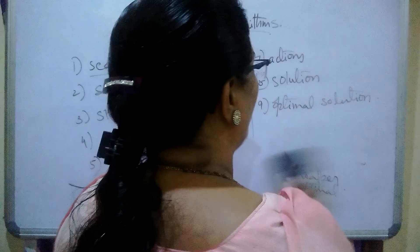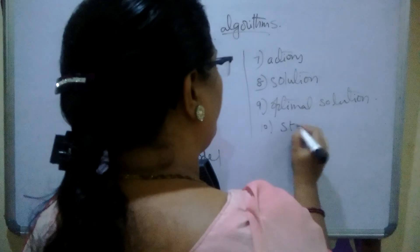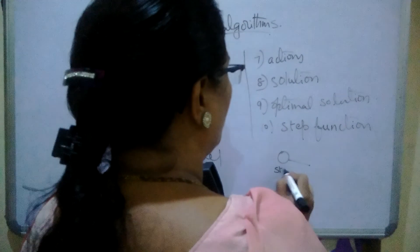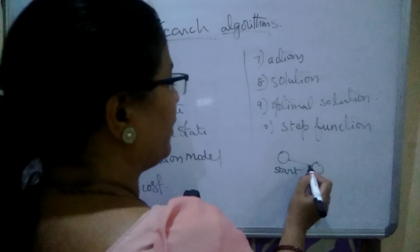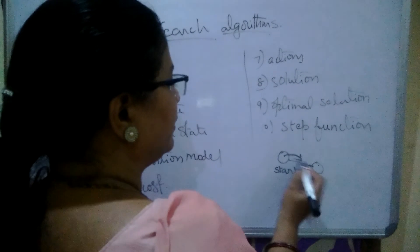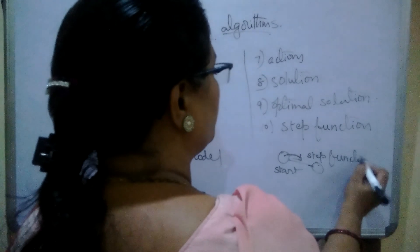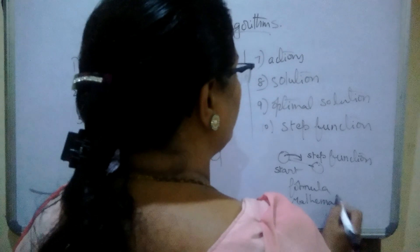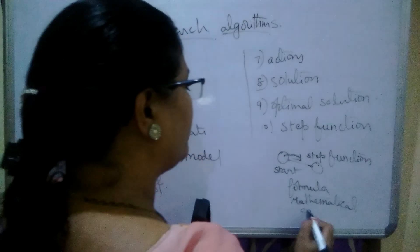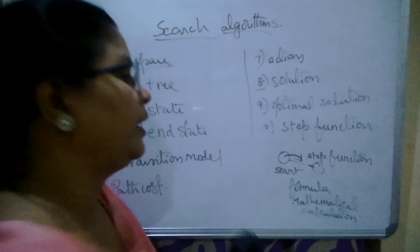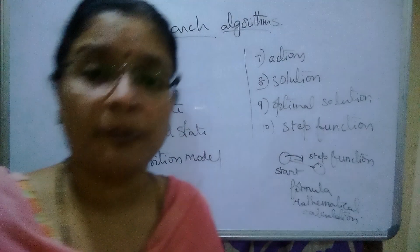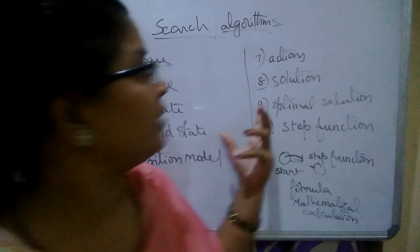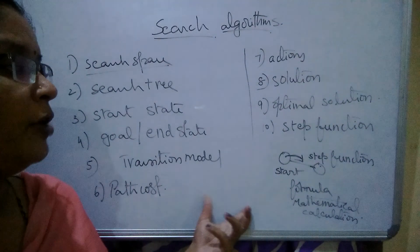The next one we need to talk about is the step function. What is the meaning of step function? From the starting root node or initial node to the goal node, you use some kind of function — some kind of formula or mathematical calculation — to move from one node to the next. That activity is called the step function. A step function is a mathematical calculation from one node to another node, and the agent steps from node to node using the step function. The search algorithms use all these relevant types of terminology.